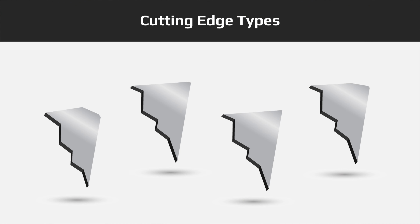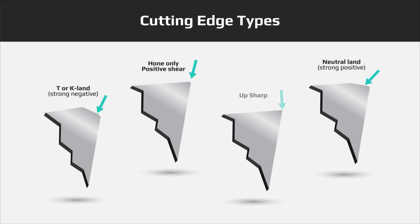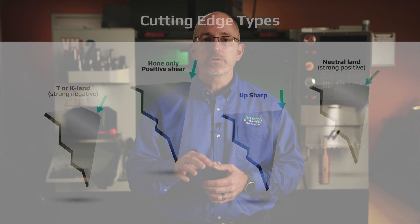Recall from our last video the four main types of cutting edges: a T or K land, a neutral land, a honed edge, and an up sharp edge. In this lesson, let's take a look at which edge makes the most sense for various material groups.